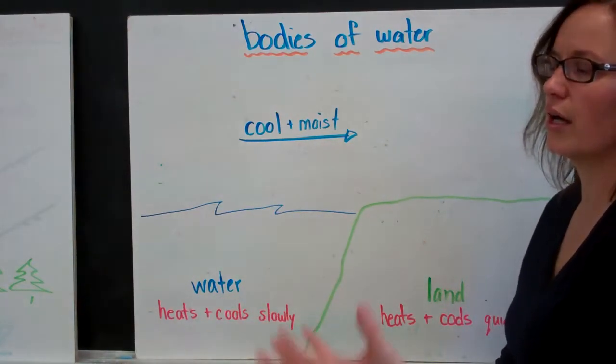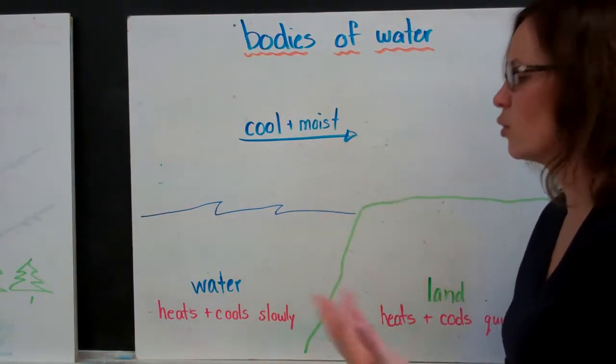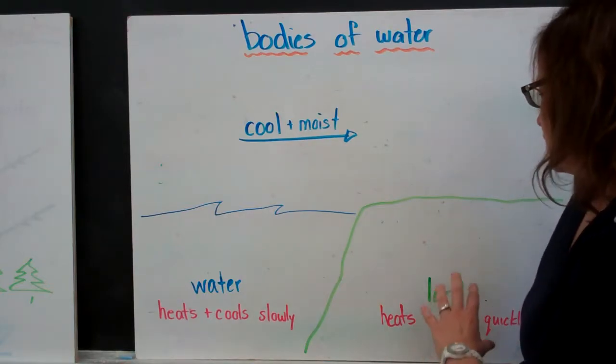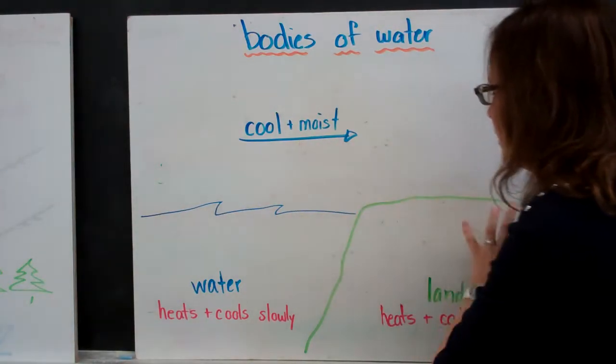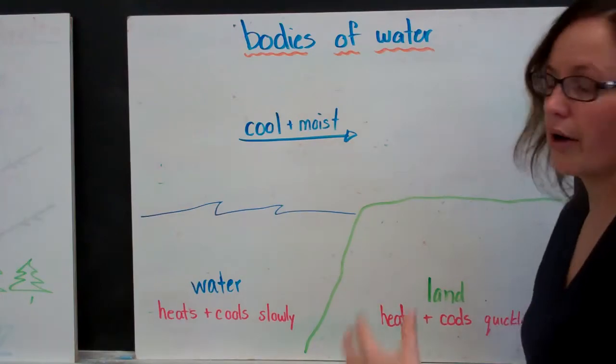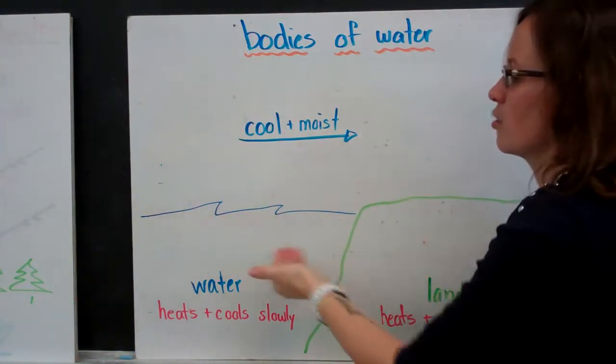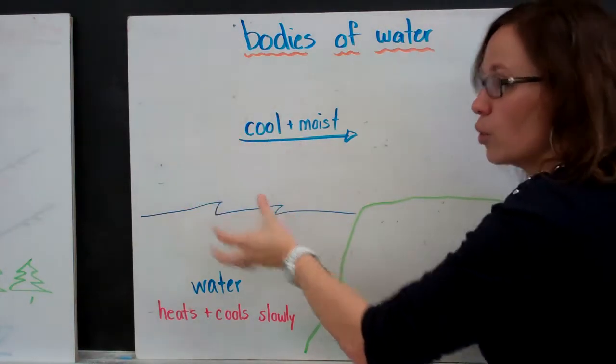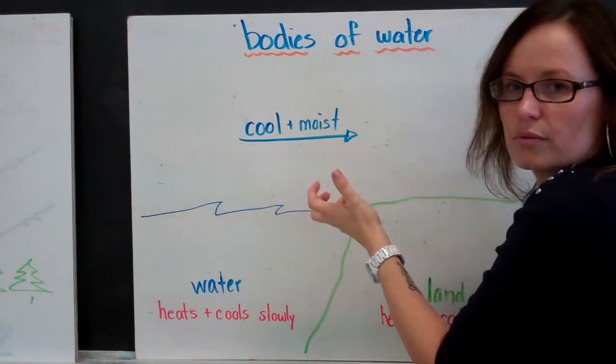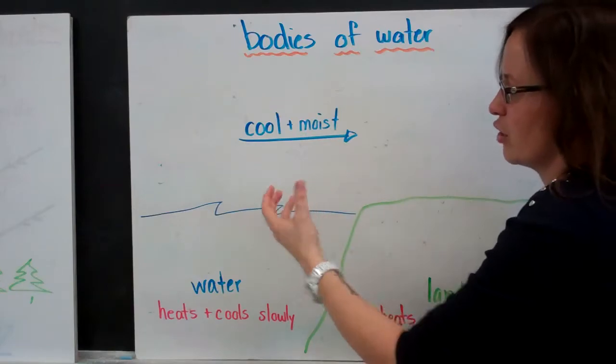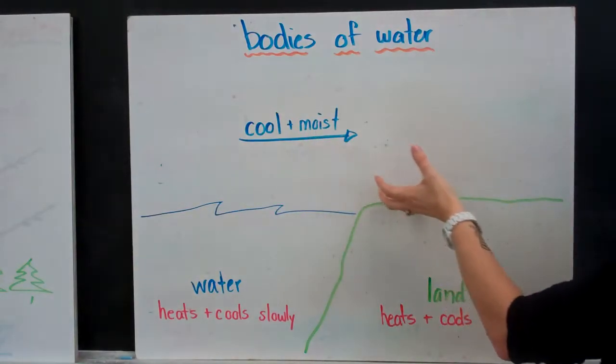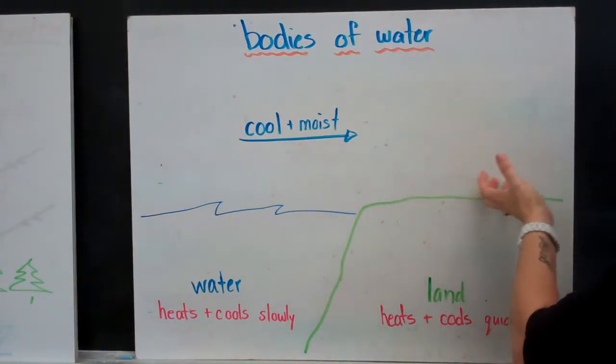Water heats and cools very, very slowly. So when we have land that's close to water, you have this movement of air across the water, which cools it, also absorbs moisture as it evaporates off the surface, and that air then travels across the land affecting the climate.